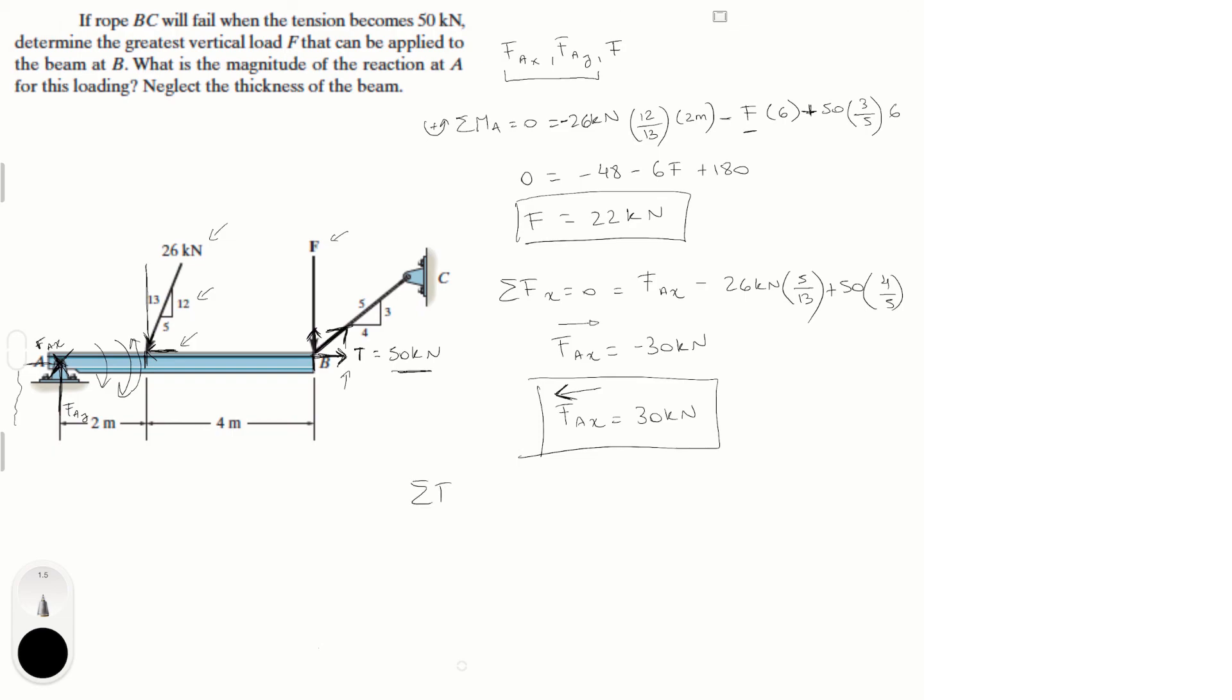Then the last step, which is the sum of the forces in the Y is equal to zero. And it's equal to F_A in the Y minus the Y component of this 26 kN force, which is 26 kN times 12 over 13 minus F. Plus the Y component of the tension, which is 50 kN times 3 over 5.